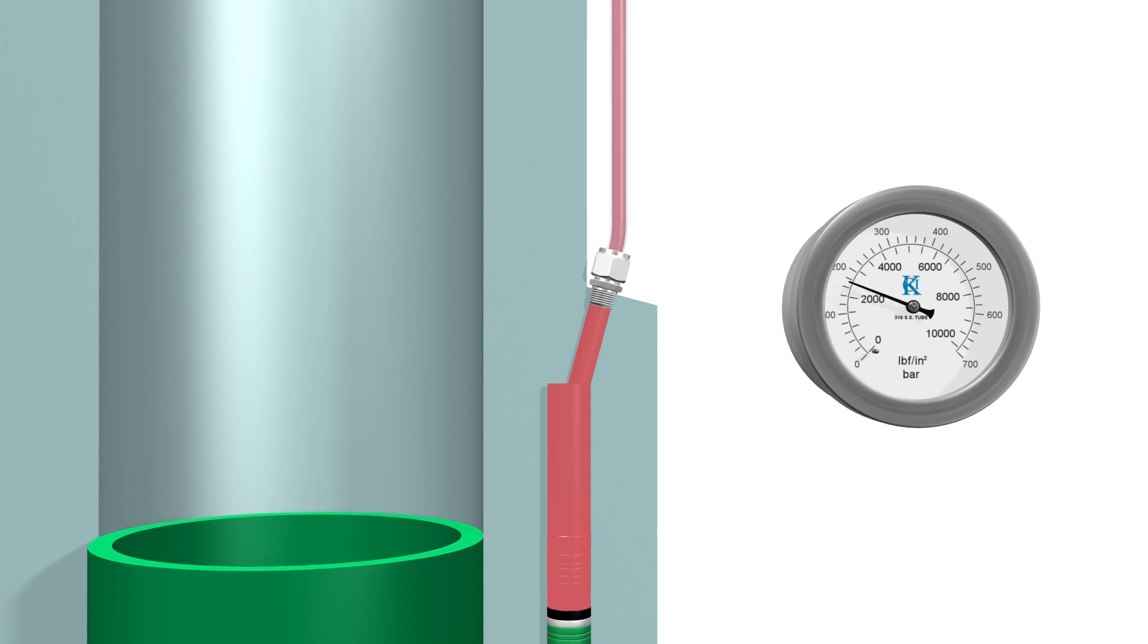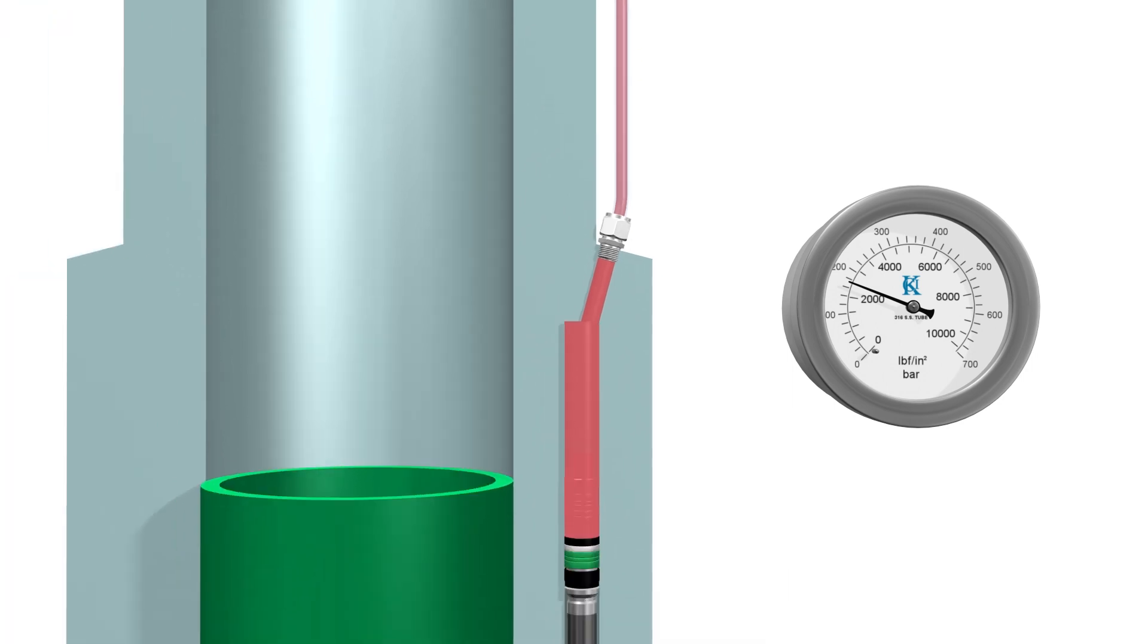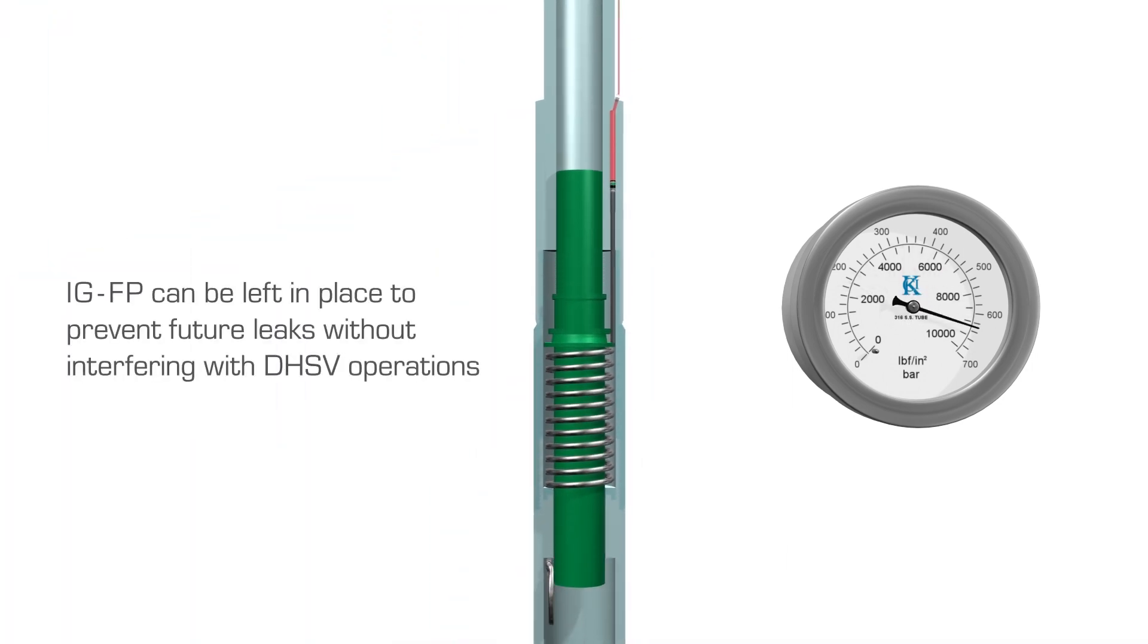After the leak is repaired, the downhole safety valve can be operated as normal. The IGFP can be left in place to prevent future leaks without interfering with the downhole safety valve operation.